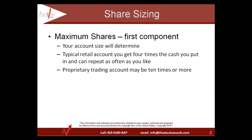Let's begin with a very simple basic concept: the maximum shares that you'd be allowed to buy. Your account size determines this, as well as the type of account that you open. A typical retail account would have four times buying power, meaning whatever cash you put in, you'd be allowed to control or purchase or short four times that value in stock.